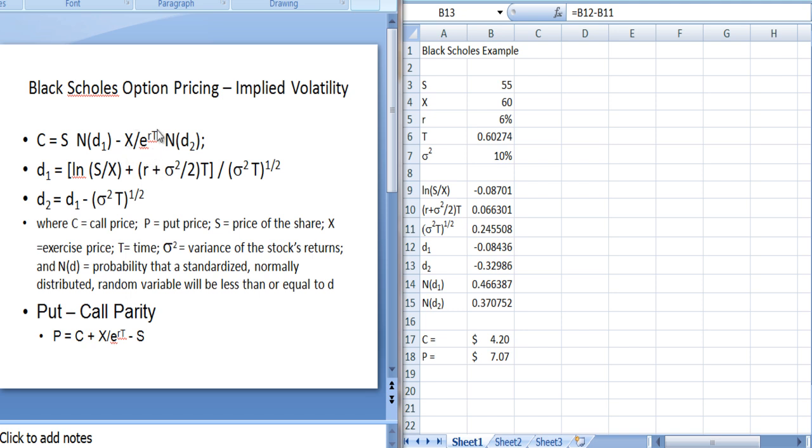This here e^(-rT) is a continuous time present value factor with r being the risk-free interest rate and T being the time until the option expires, and that should be annualized. So that should be a fraction of a year, so for 180 days it would be about 0.5.